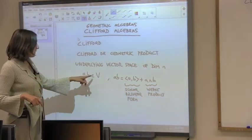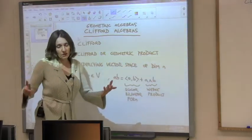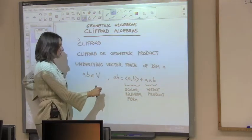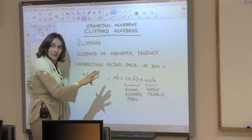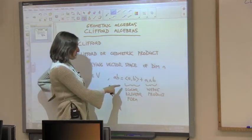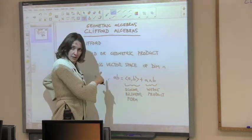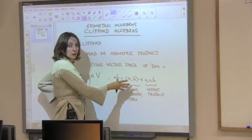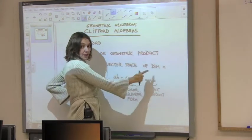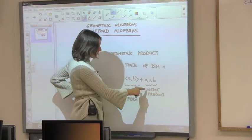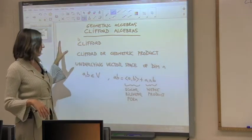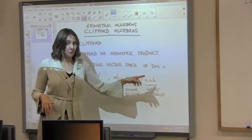You take two elements of a vector space of dimension n. The Clifford product — defined without any dot in the middle — is the sum of two different operations we've already encountered: the scalar or inner product (a bilinear form), which gives a scalar, plus the outer product of Grassmann algebra, the wedge product. When we operate two vectors with the Clifford product, we get a scalar plus a multi-vector.